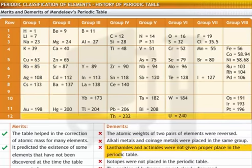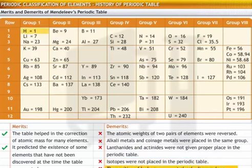Lanthanides and actinides were not given proper place in the periodic table. Isotopes did not find a place in the periodic table. The table did not clearly indicate the position of hydrogen.